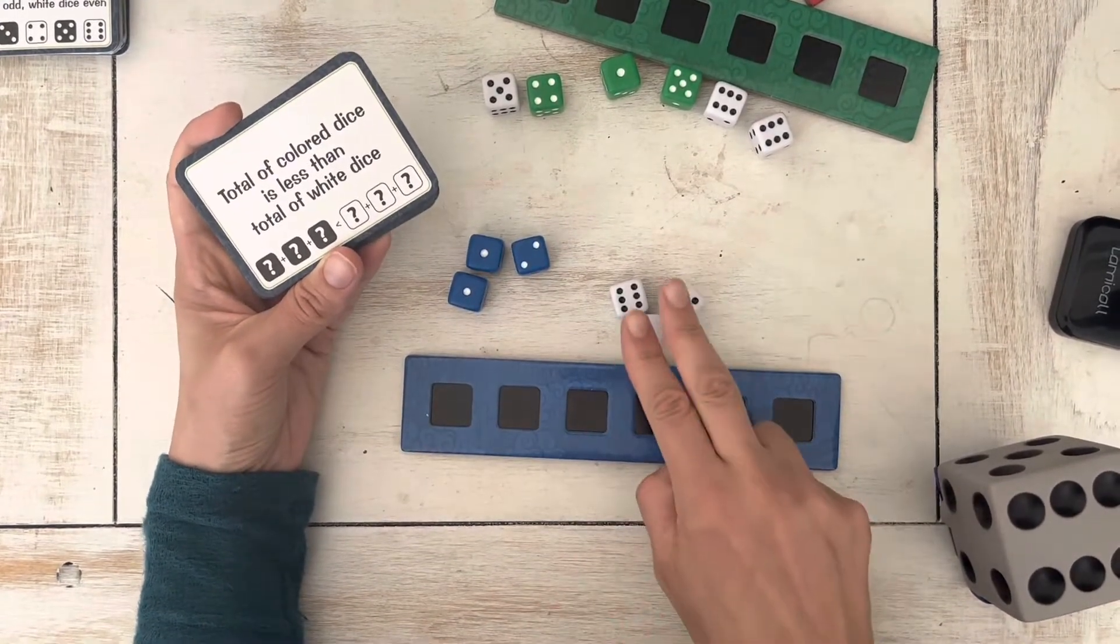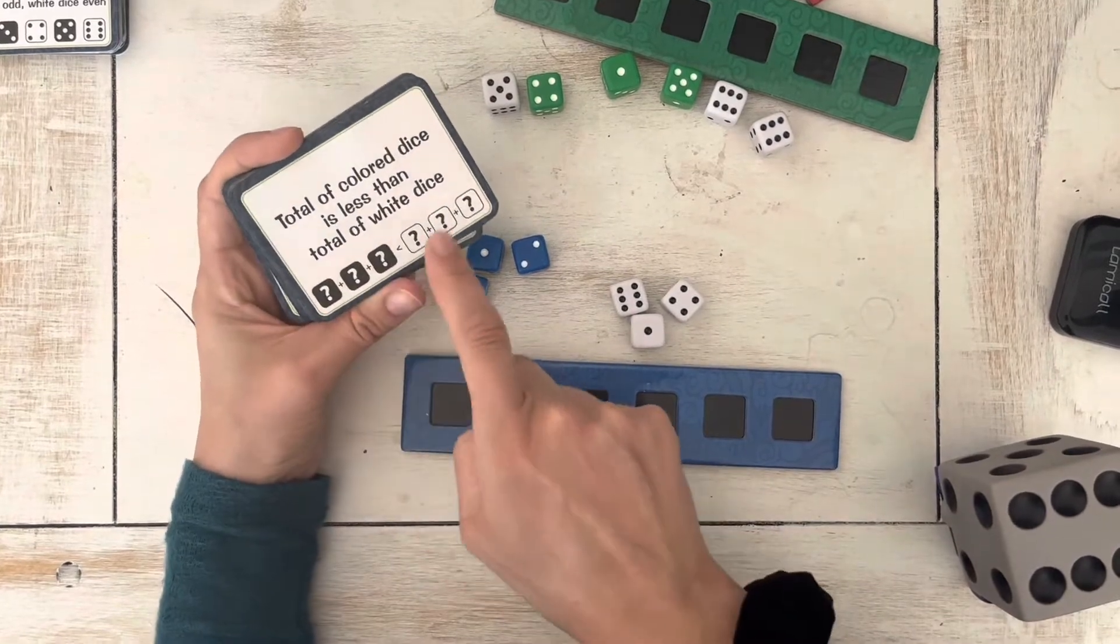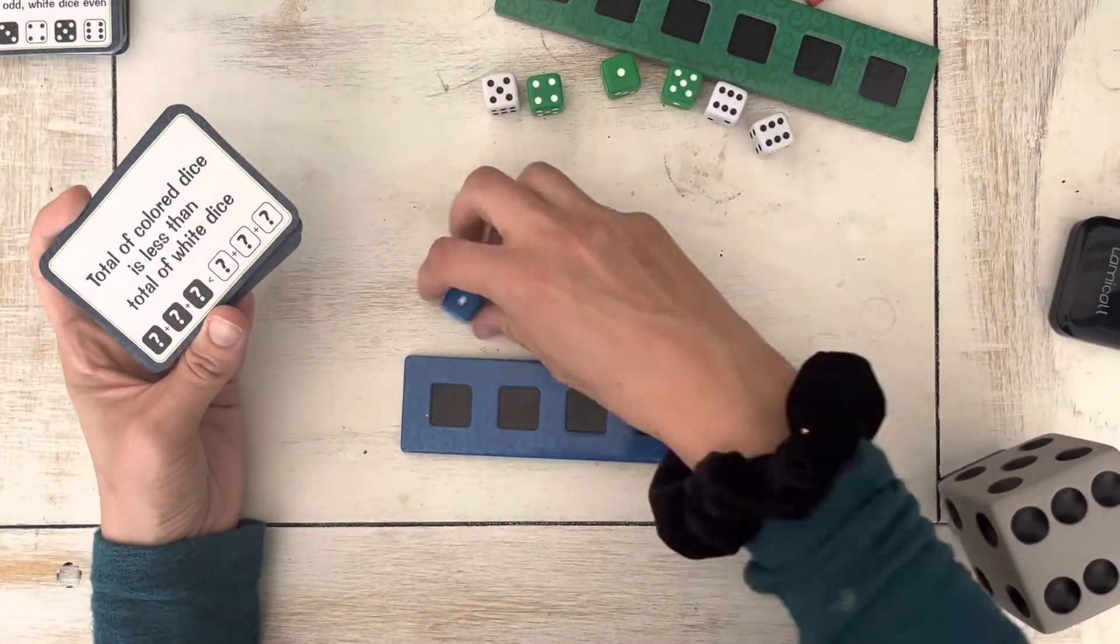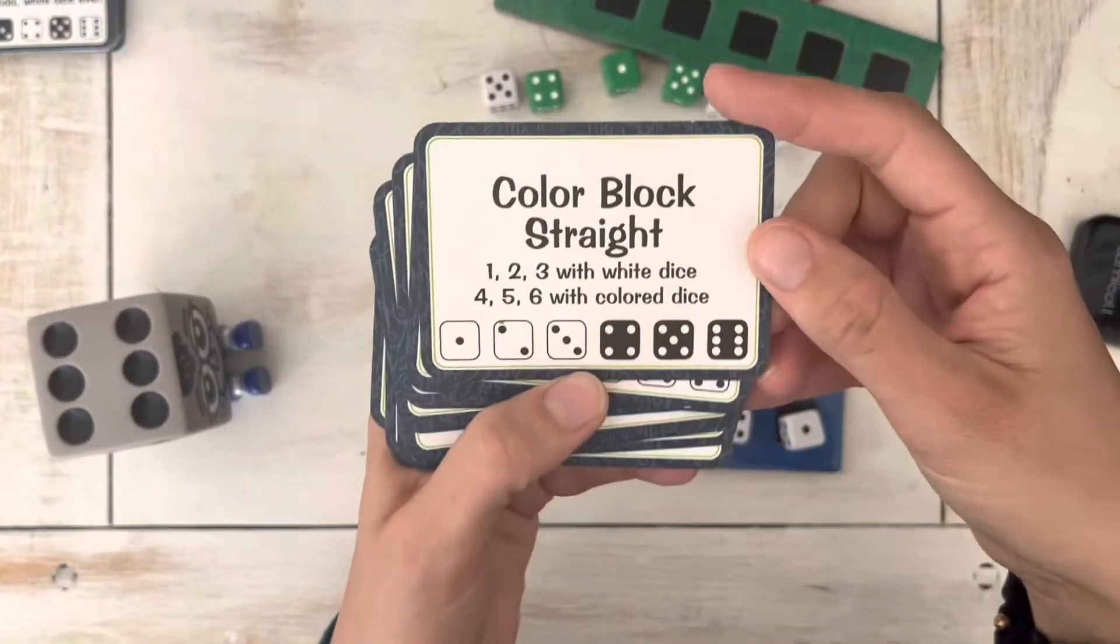I want little numbers for the colored dice and big numbers for the white ones. So one plus one plus two would be four. And then we have eleven. So dark is less than the white added up. So then I would be able to stick them in here.